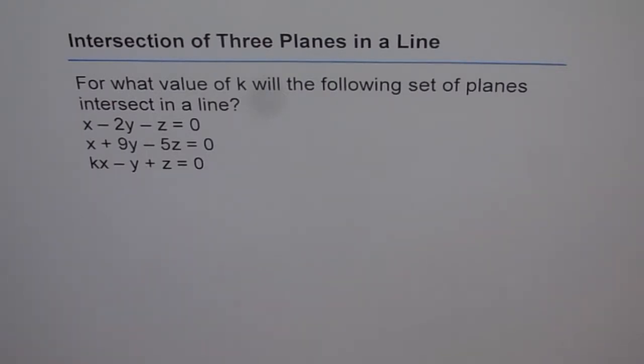So the 3 plane equations are given to us: x minus 2y minus z equals 0, x plus 9y minus 5z equals 0, and kx minus y plus z equals 0.